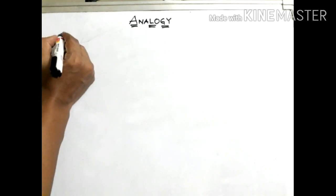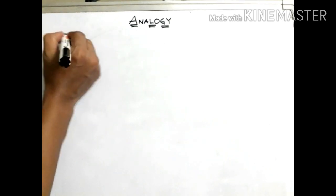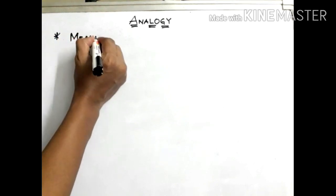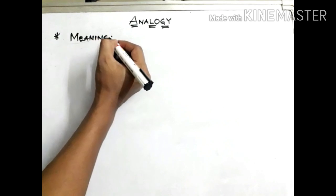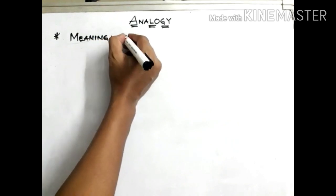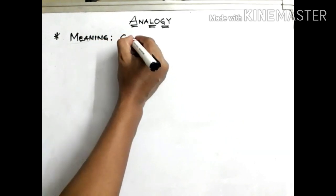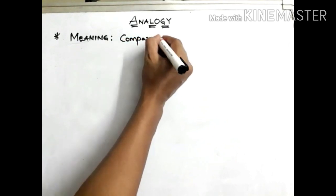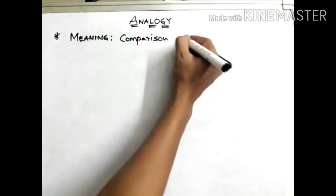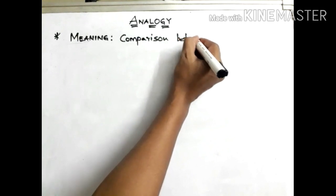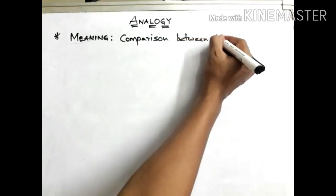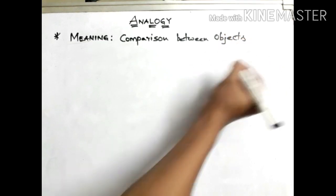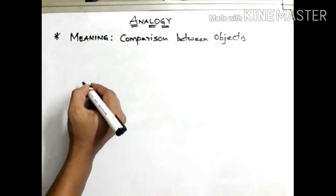So first, what exactly is the meaning of analogy? Whenever we call things are under analogy, it says that we have to compare. That means analogy means comparison between objects. So the comparison between objects can be taken as analogy.